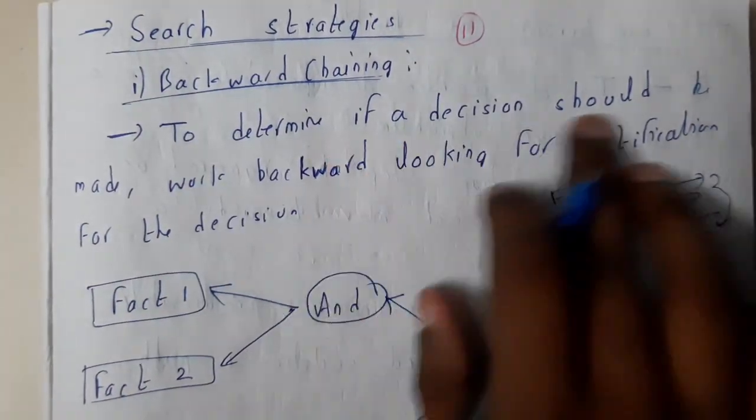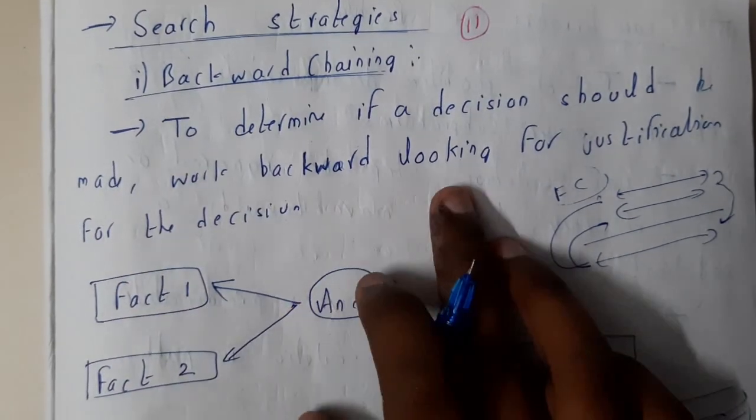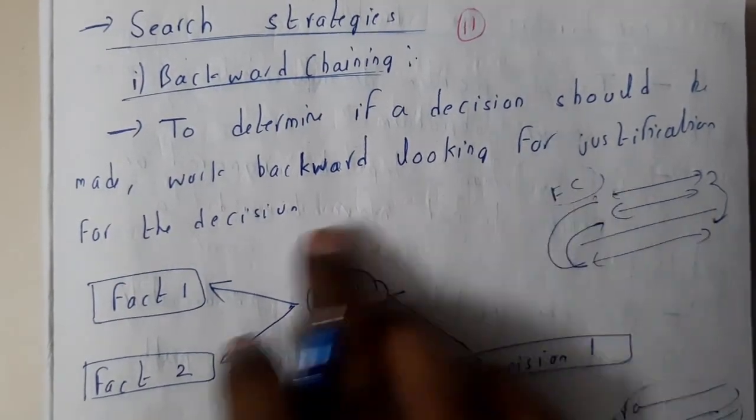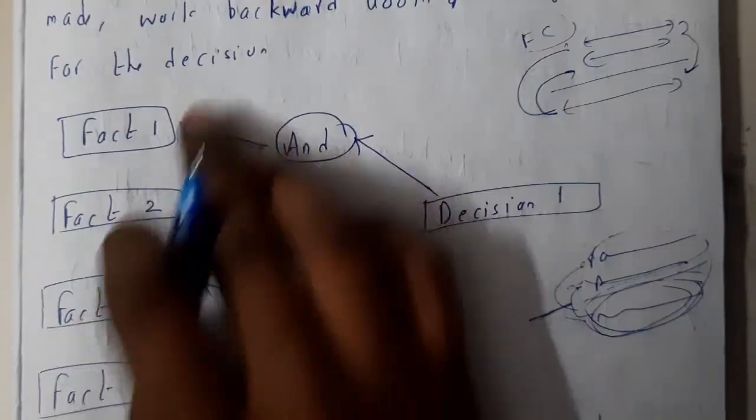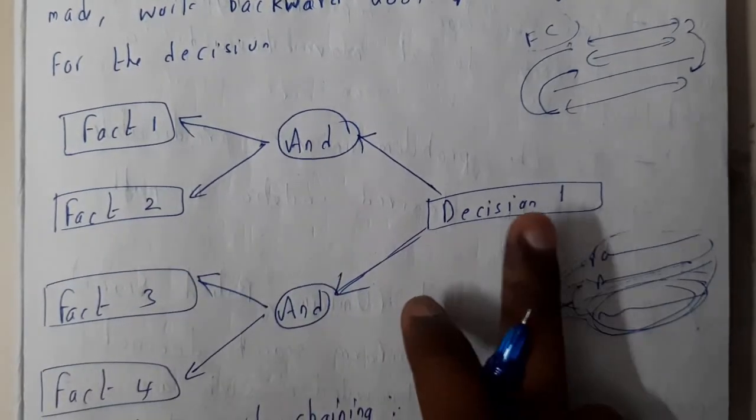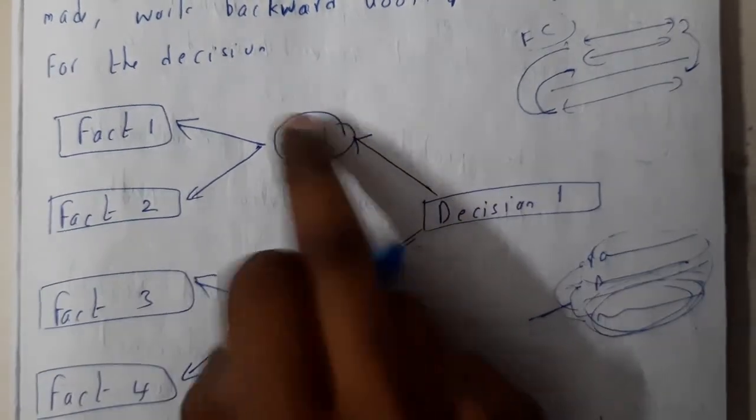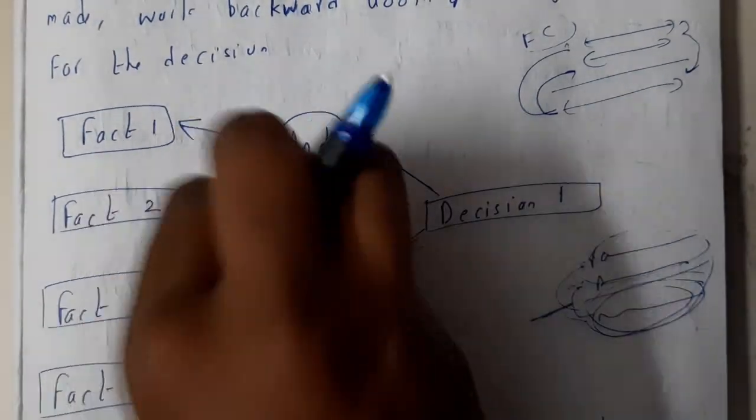So the diagrams you'll just go through them. Let us discuss. To determine if a decision should be made, working backwards looking for justification for the decision. So initially you'll be having the final decision, you'll be dividing it into two parts and you'll be dividing them into facts. So this is nothing but your backward chaining.